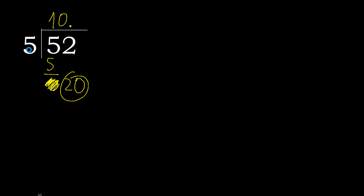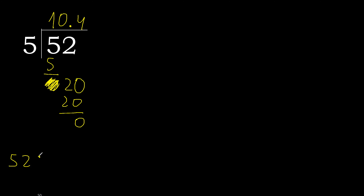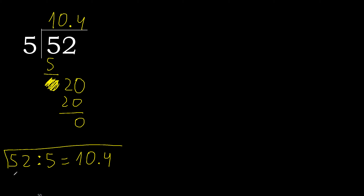20. 5 multiplied by 4 is 20. 20 minus 20 is 0 — therefore finish. Therefore 52 divided by 5 is complete.